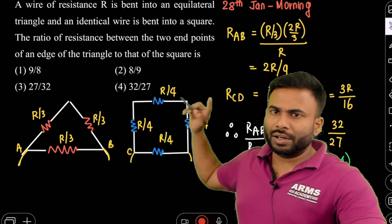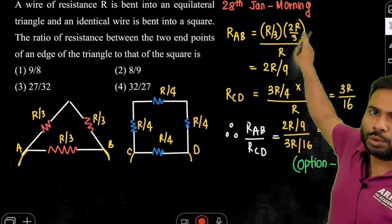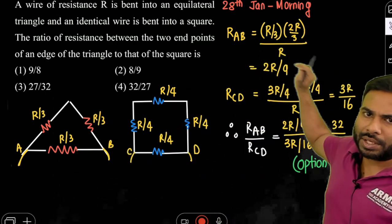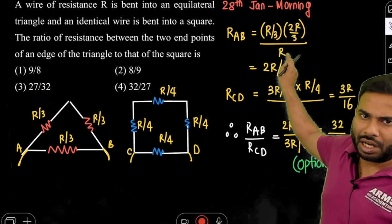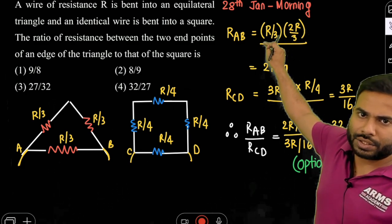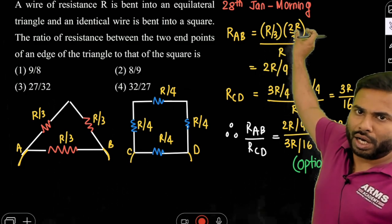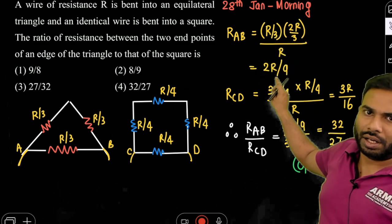These two are the same. Using the parallel combination formula R1 × R2 / (R1 + R2), these two are in addition giving R. The 1R terms cancel, giving 2R/3, divided by 3, which equals 2R/9.